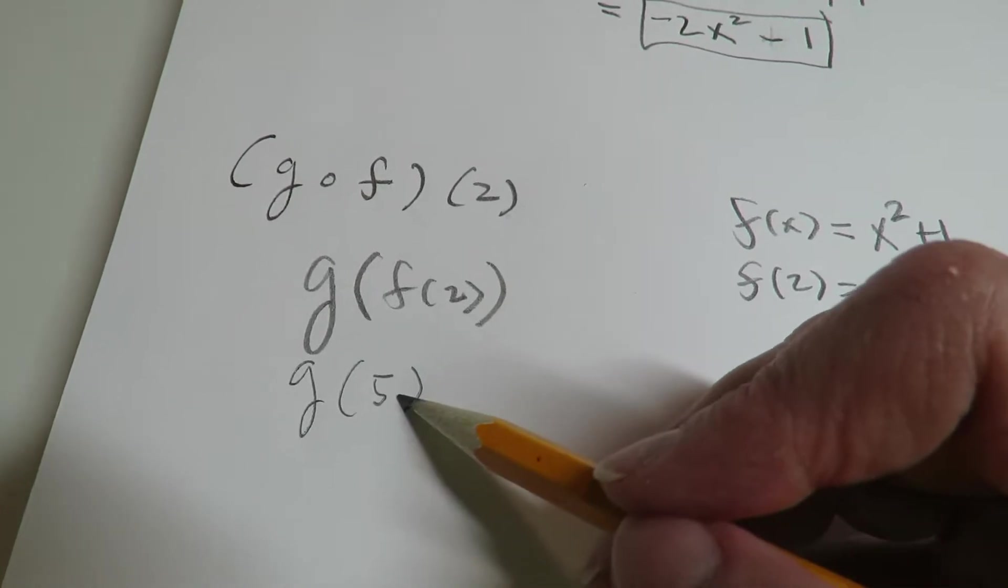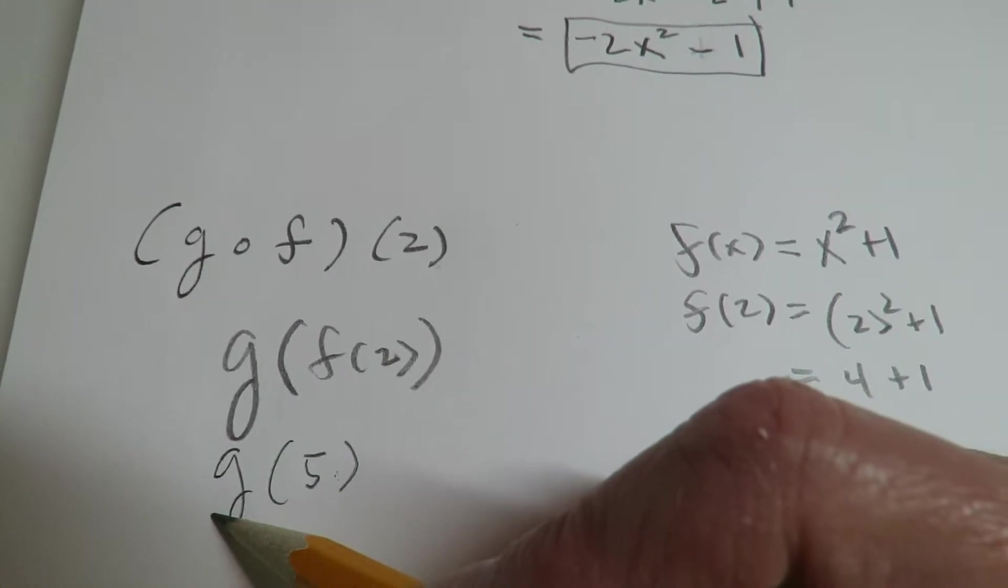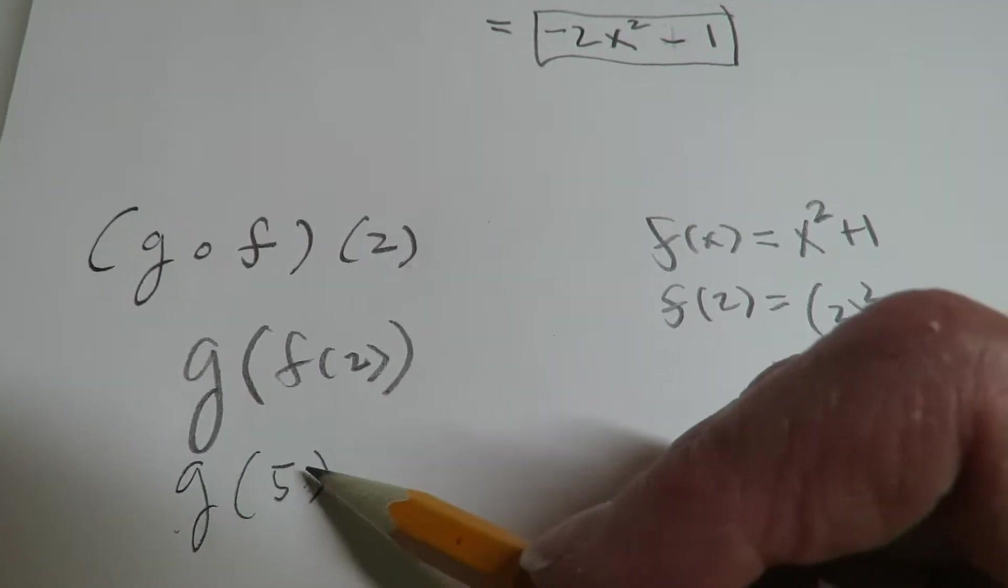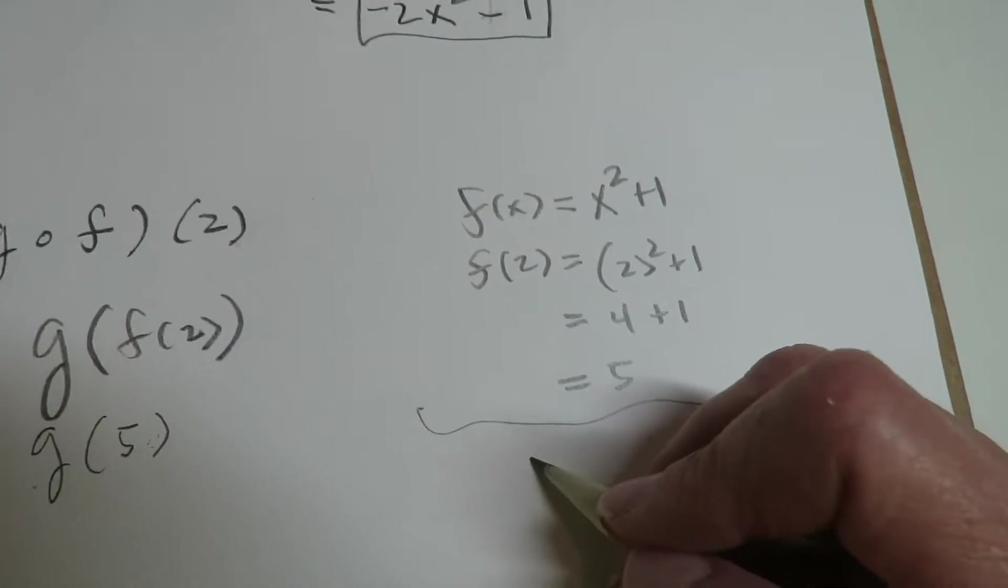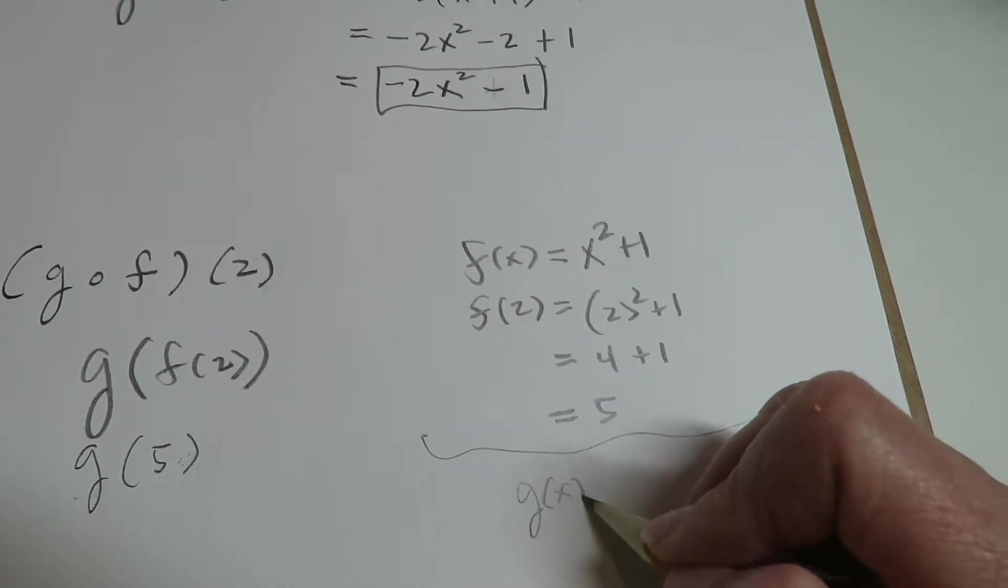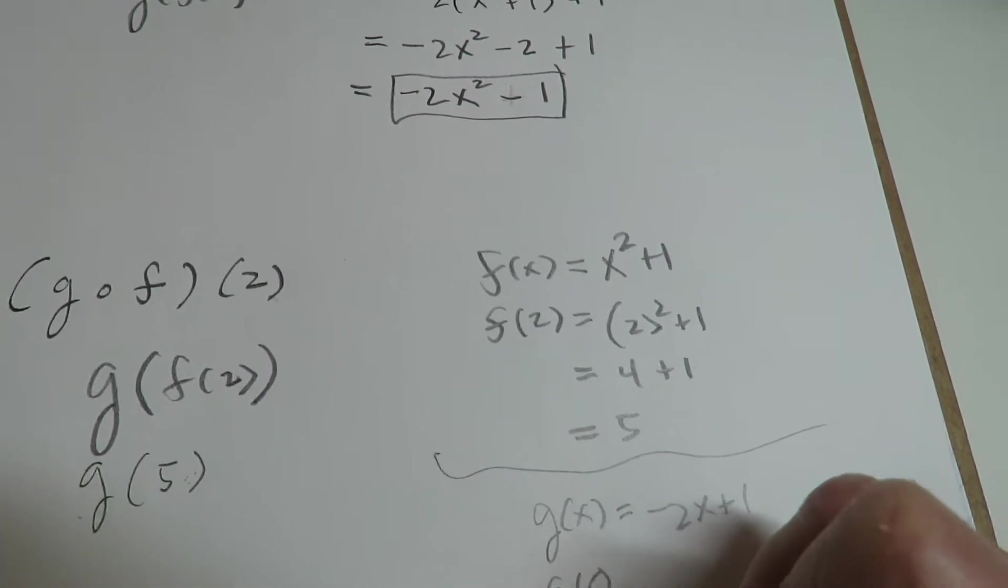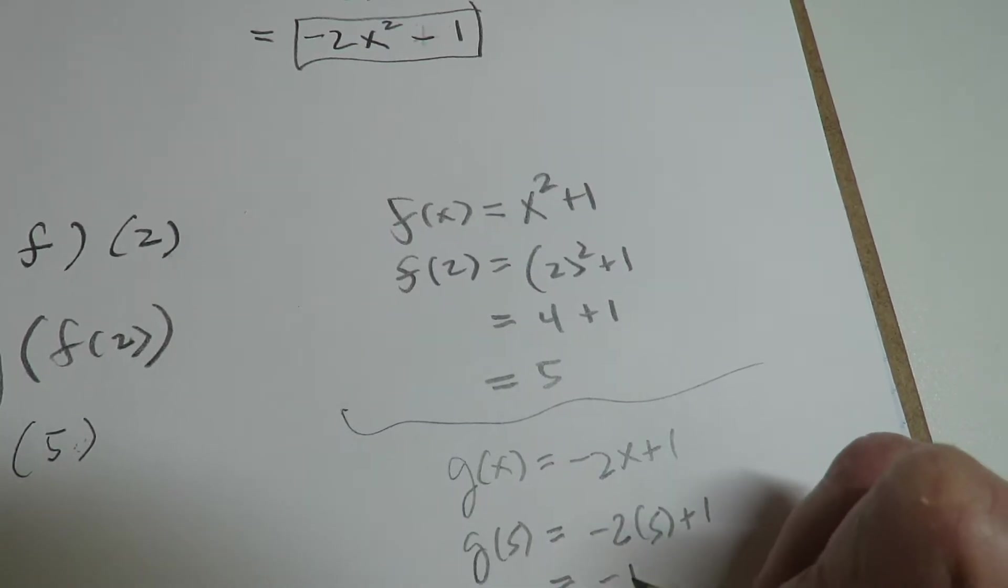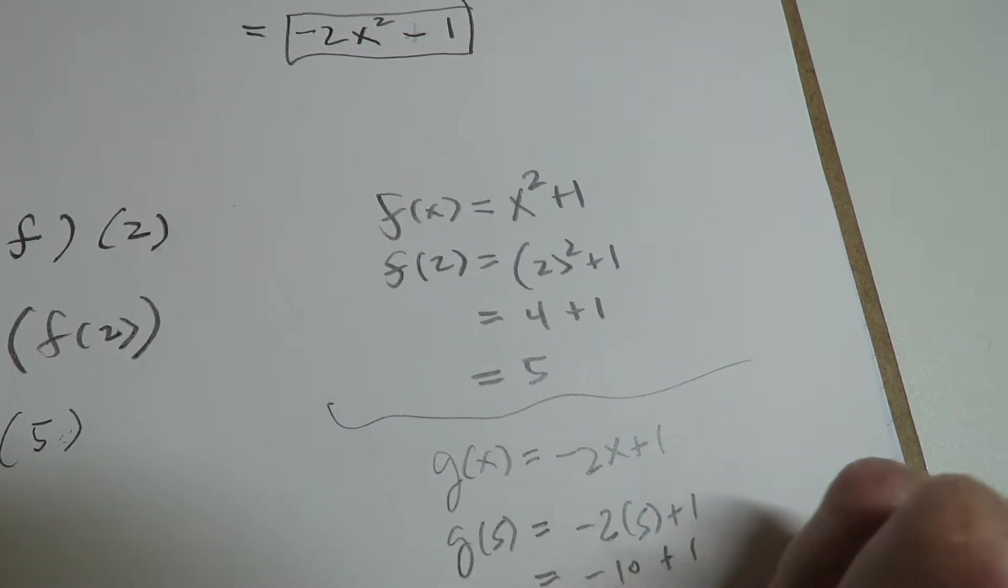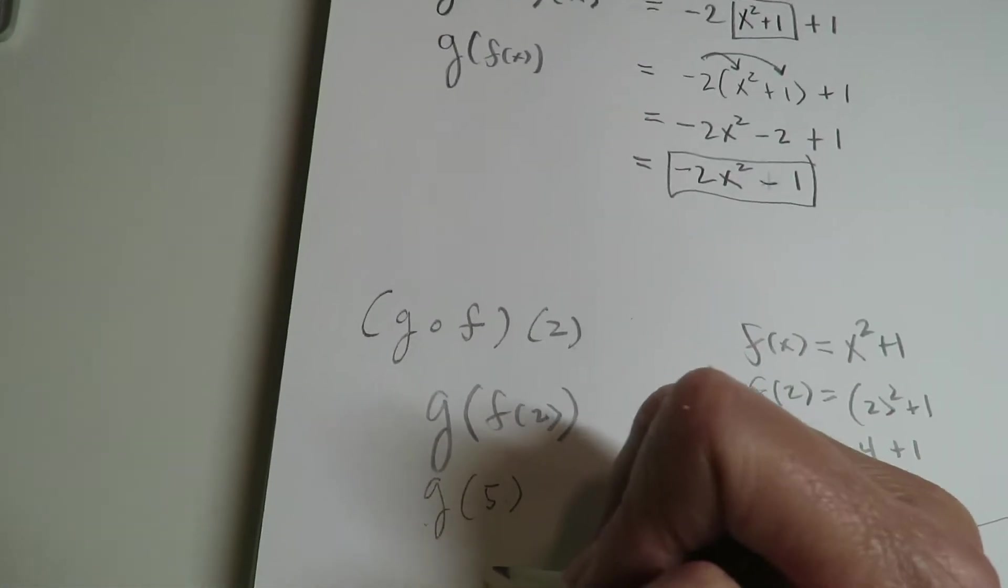So the input of 2 gives an output of 5, but that output value becomes an input value for G or a domain value for G. So now we do G of 5. Let me just move G down here. So G, again, is negative 2x plus 1, which is negative 9.